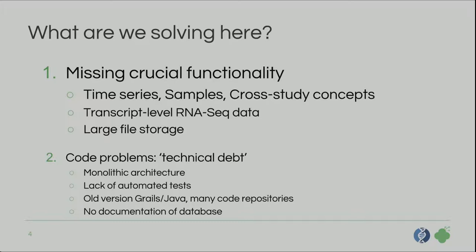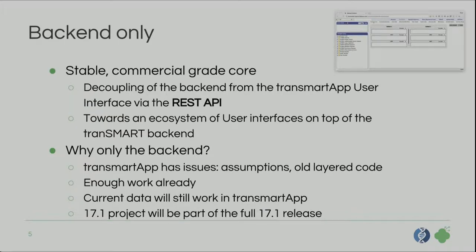Briefly on the monolithic architecture: we're going to decouple the front-end and the back-end. The current 17.1 project is only on the back-end side, so the UI won't get any new stuff here. We're focusing on this stable commercial-grade quality core, and you can access all these new features via the API. We've seen many examples of API clients — like the new UI that Vivo has shown, the Spotfire client, etc. — so we can have this nice ecosystem of different apps on top of this REST API.